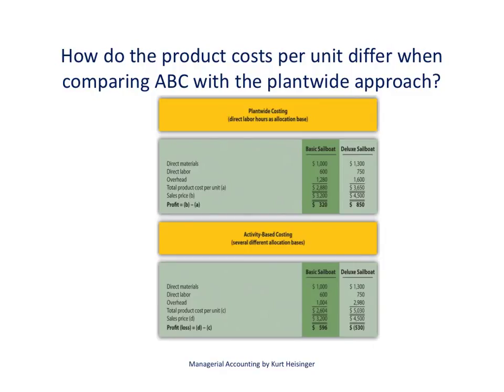This is Kurt Heisinger, accounting professor at Sierra College and author of Managerial Accounting. This video extends our discussion of activity-based costing. It's the part two video related to activity-based costing, and here we're going to discuss how product cost information can be used when compared to other approaches to allocating overhead, as well as the advantages and disadvantages of using activity-based costing and what the entries look like in an activity-based costing system.